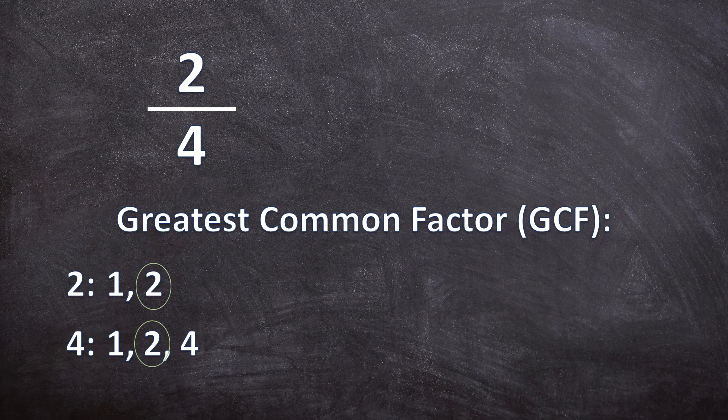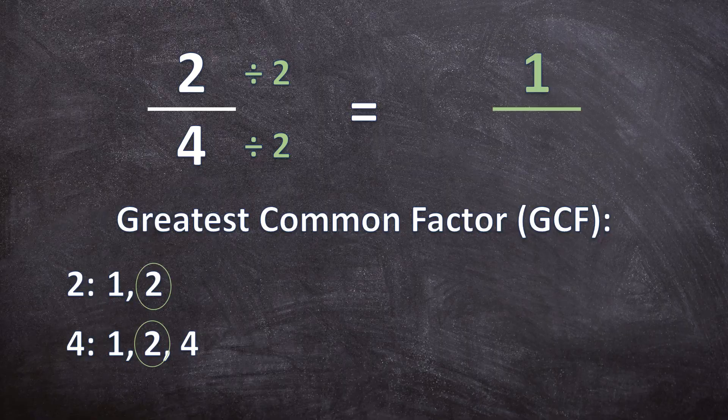So you will take that two and divide the numerator and the denominator by two, and then you'll get your simplified fraction. So two divided by two is one, over four divided by two is two. And that's how you will get your simplified fraction.